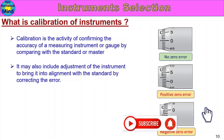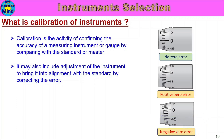Calibration may also include adjustment of the instrument to bring it into alignment with the standard by correcting the error. Sometimes an instrument will be calibrated and there is a positive zero error or negative zero error. If you correct it, it will reach the no zero error condition. There are two types of calibration.